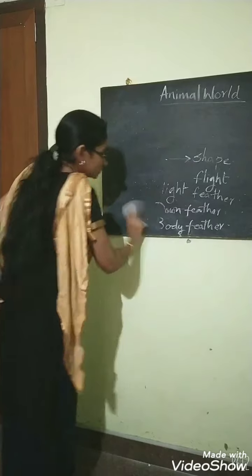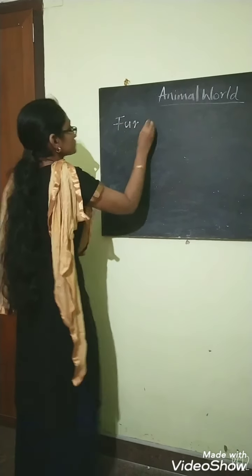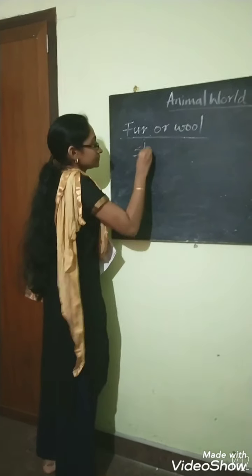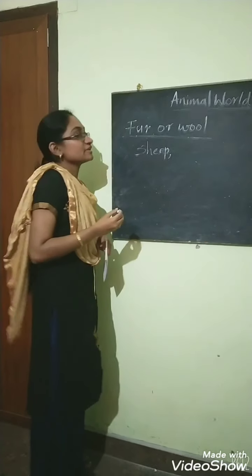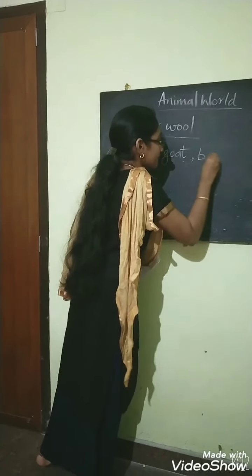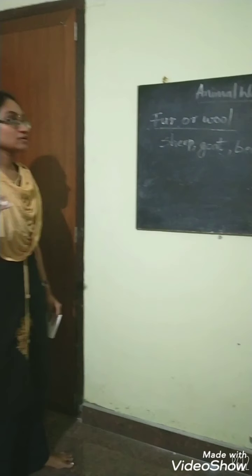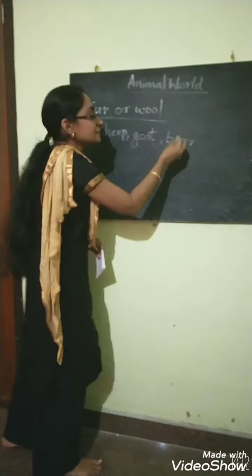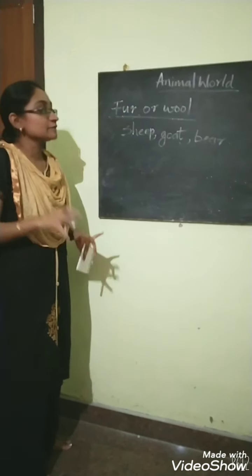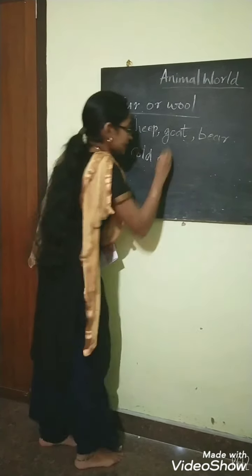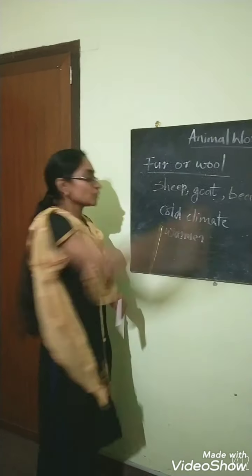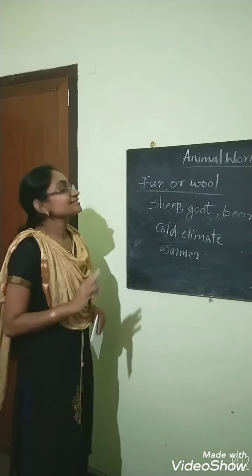The next type is fur or wool. Some animals like sheep, goat, and bear have fur on their body. Fur means thick wool, or just the outer covering of these animals. Sheep, goat, and deer have fur on their body. This fur helps them to survive in cold climates and keeps their body warmer. That is all about fur or wool.